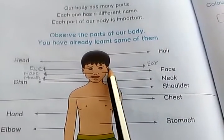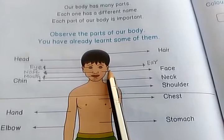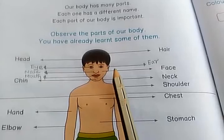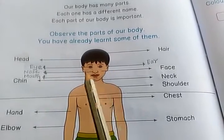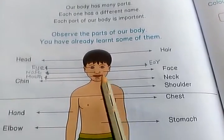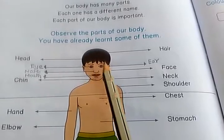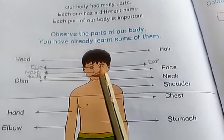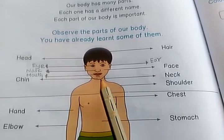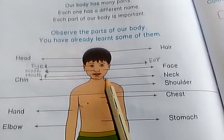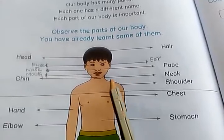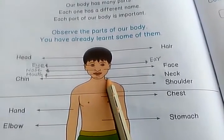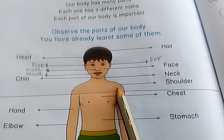Then what is this? Neck. Then what is this? This is face — Moogam. Then what is this? Neck. This is neck. Then what is this? This is shoulder.